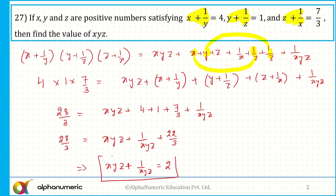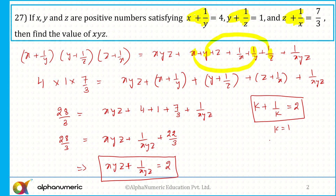Now another important thing: whenever there is a number k and its reciprocal, if the sum of the number and its reciprocal equals 2, that is only possible if k equals 1. If k equals 1 then only k plus 1 by k will equal 2. So it means simply that the value of xyz must be equal to 1. The correct answer for this question is x into y into z equals 1.